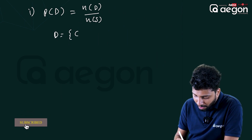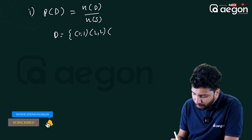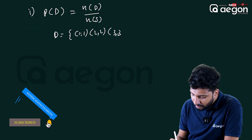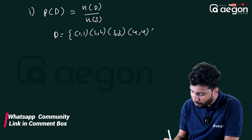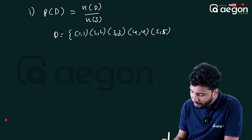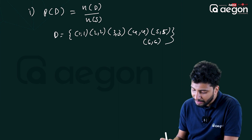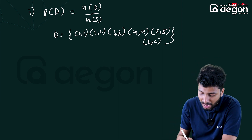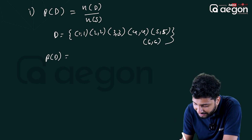We have the probability. For event D, the pairs are: (1,1), (1,2), (2,2), (3,3), (4,4), (5,5), (6,6). Now let's carry up P of D.